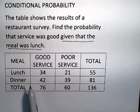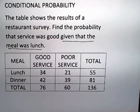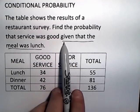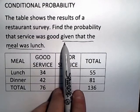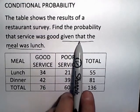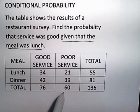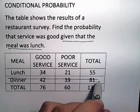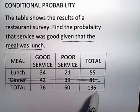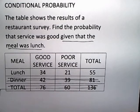The original sample space consists of both lunch and dinner, good service, and poor service. However, the condition tells us that the sample space has been reduced to simply lunch. So we can completely get rid of the numbers involving dinner, and the horizontal totals no longer apply.